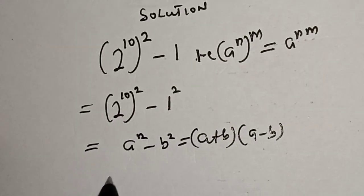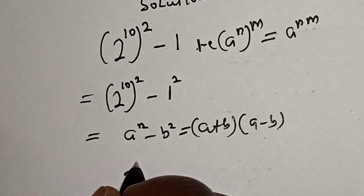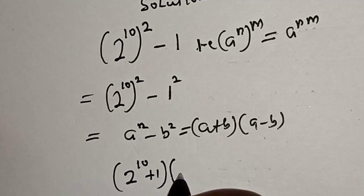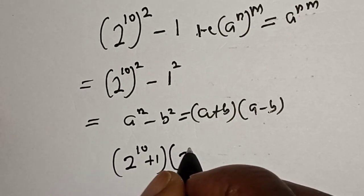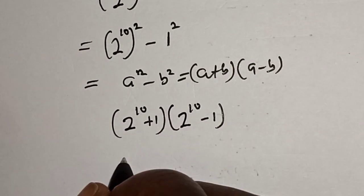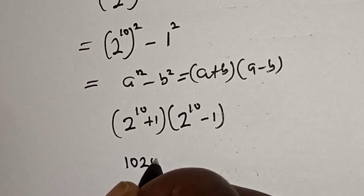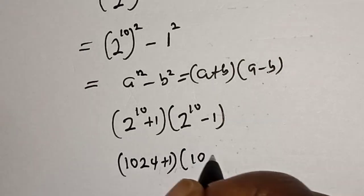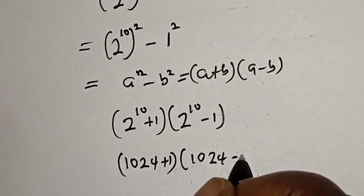Now this is 2 raised to power 10 plus 1, multiplied by 2 raised to power 10 minus 1. 2 raised to power 10 is 1024, plus 1 multiplied by 1024 minus 1.